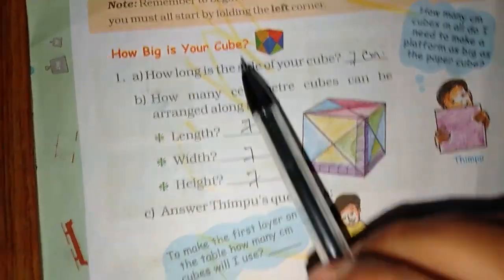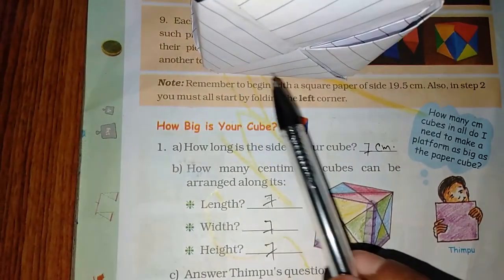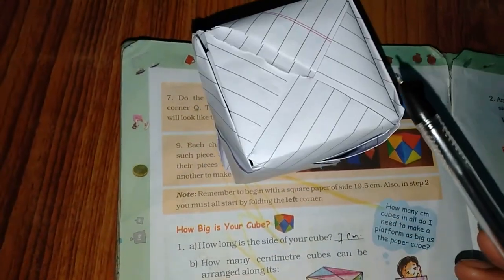Okay, now look, how much will it be on one side? Seven. On this side? Seven.